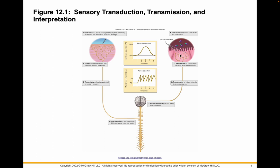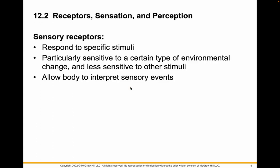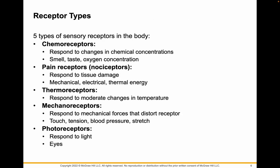This is taste buds on the tongue with little chemicals. We respond to specific stimuli in specific ways. There are five types of sensory receptors in the body, and you'll need to know this for the test. There are chemoreceptors — 'chemo' means chemicals — so this covers smell, chemicals in the air, chemicals on your tongue for taste, and even oxygen concentration in your blood.